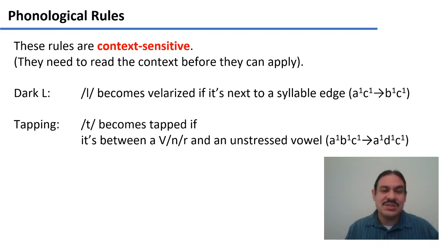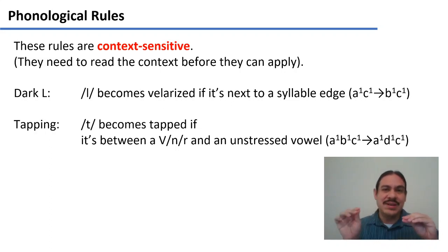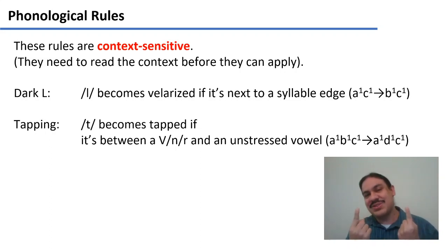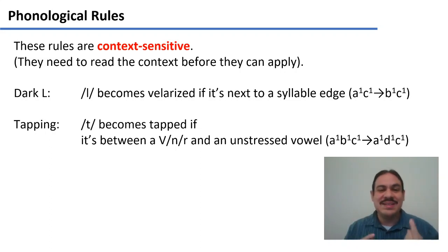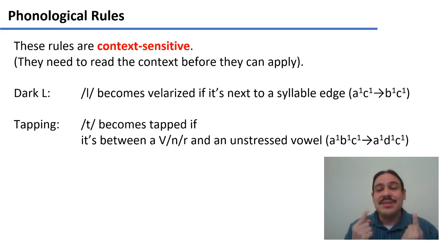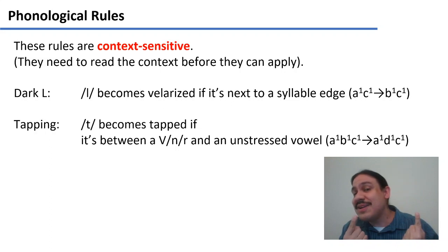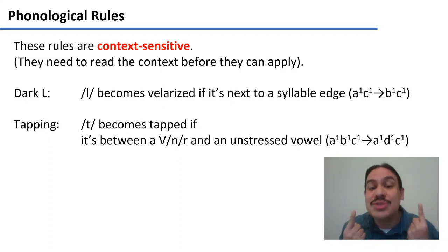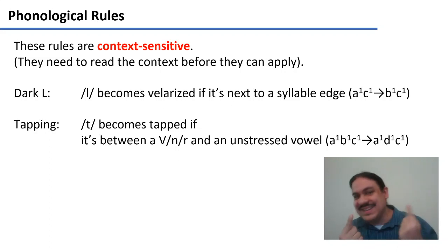Flapping in English is that a T can become a flap if it's between a vowel, an N, or an R, and an unstressed vowel. So A (the vowel), B (the T), and C (the unstressed vowel) become A, a flap, and C.